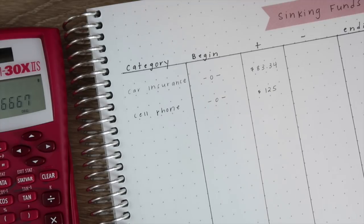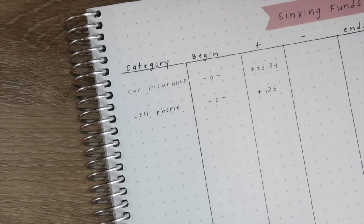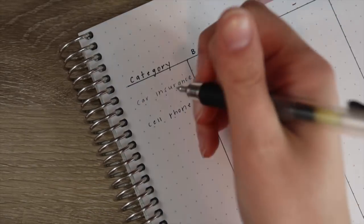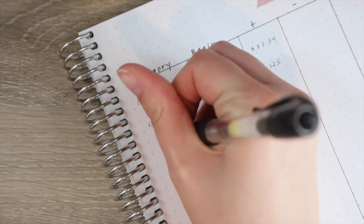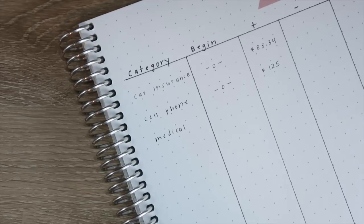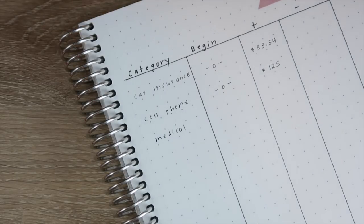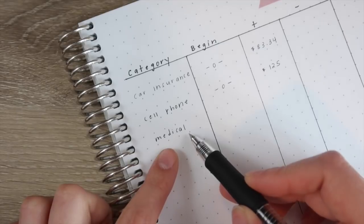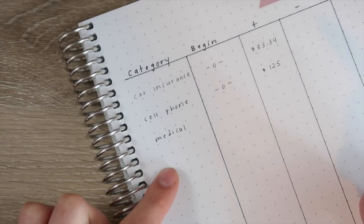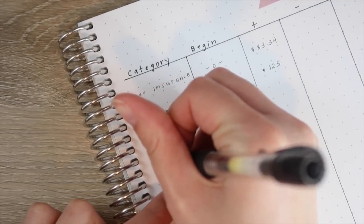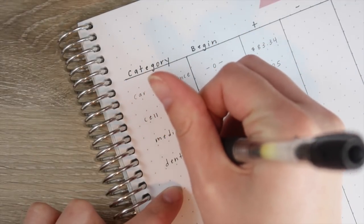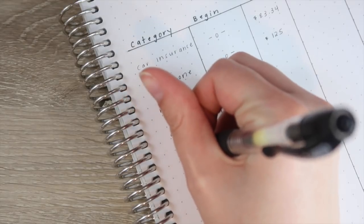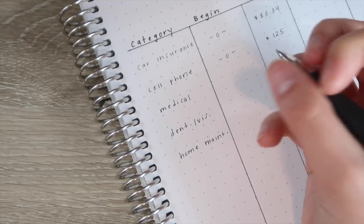There are a lot of different sinking funds that people have. If you look on Instagram there are so many sinking funds out there that people do. One sinking fund that I would love to add to our list is medical, and that is just because I never want to be in a situation where we don't go to the doctor because of medical expenses. Obviously I would never do that especially with a kid, but a lot of people don't go because they don't have the money. Another thing that you could add is dental or vision. You could also add home maintenance or car maintenance.